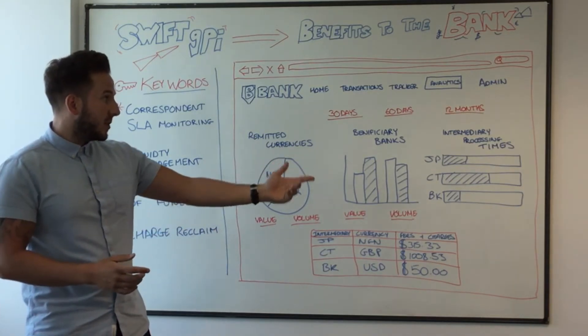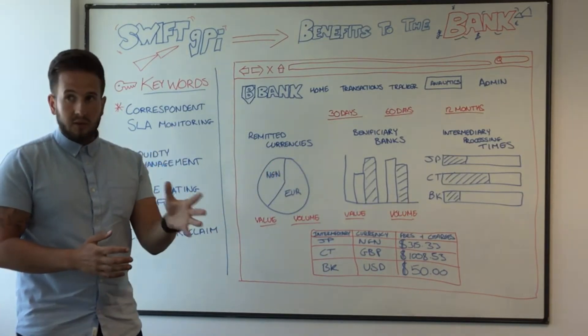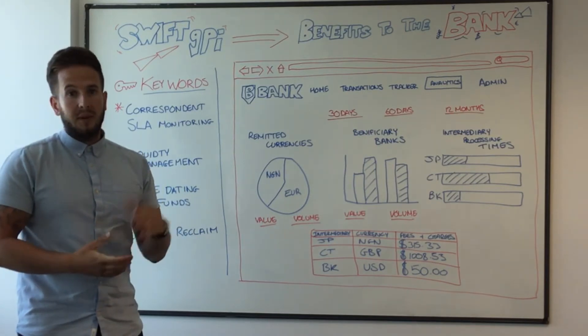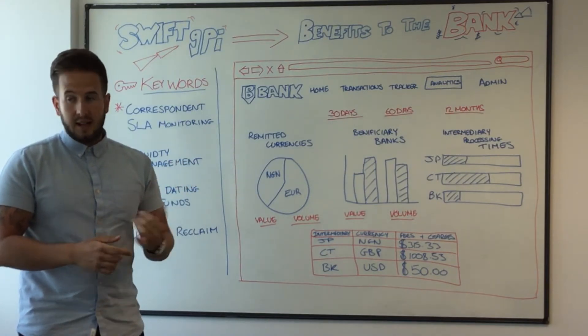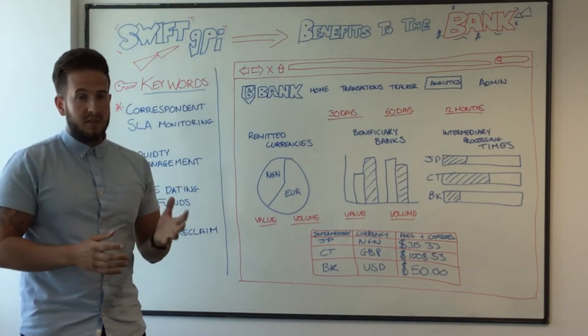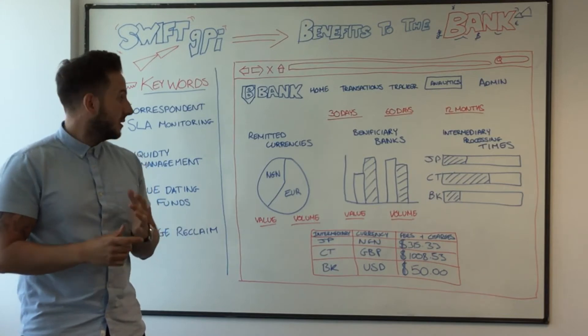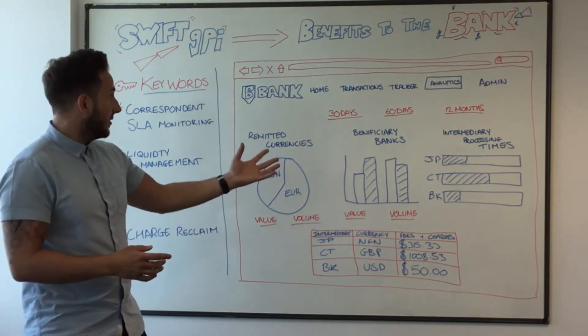Intermediary processing times. If I have one correspondent which is processing transactions for me at a particularly slow time, I can raise that in SLAs and service delivery conversations with that bank.